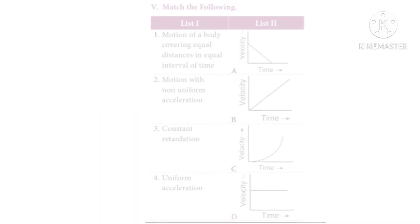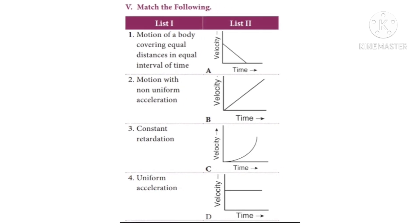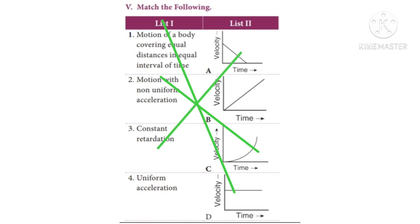Next, match the following. One: Motion of a body covering equal distances in equal intervals of time — answer: Graph D. Two: Motion with non-uniform acceleration — answer: Graph C. Three: Constant retardation — answer: Graph A. Four: Uniform acceleration — answer: Graph B.